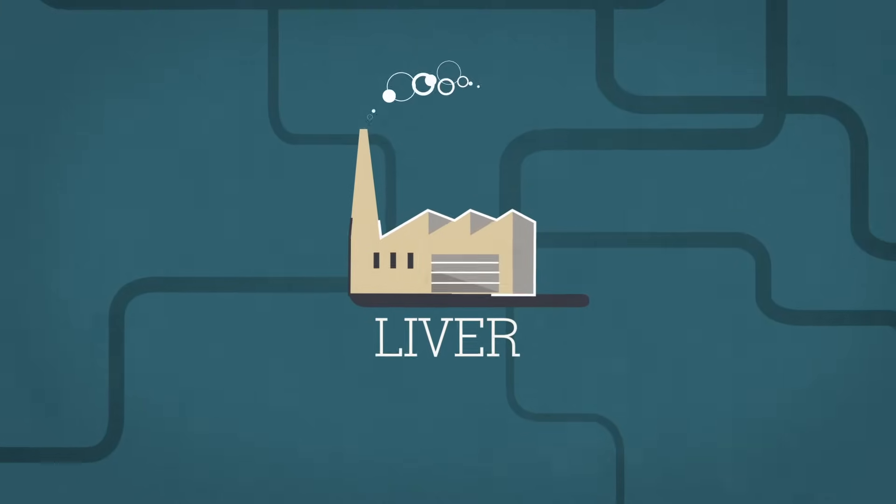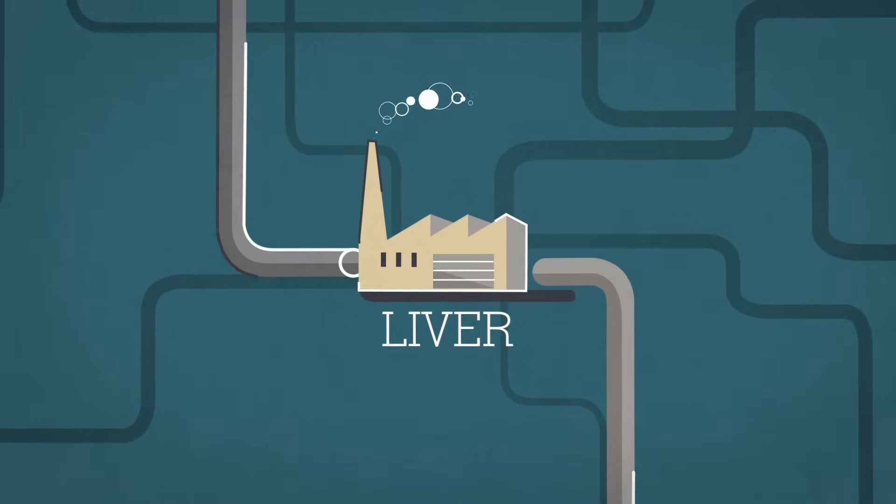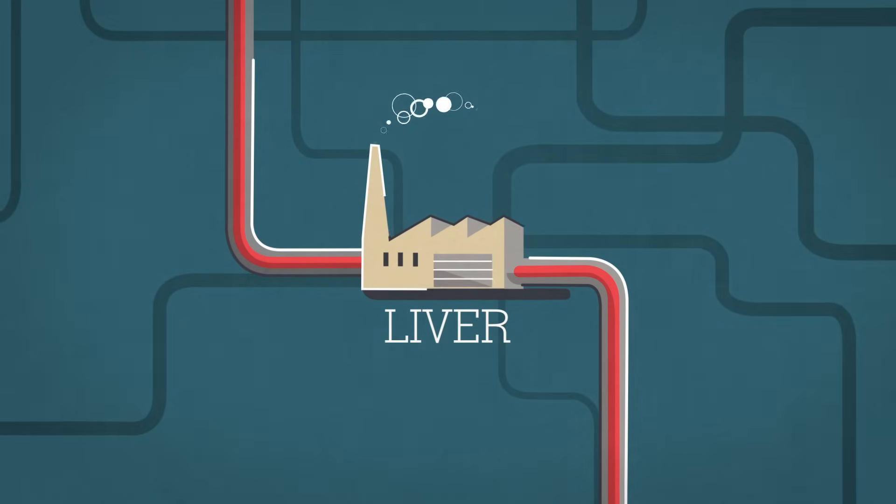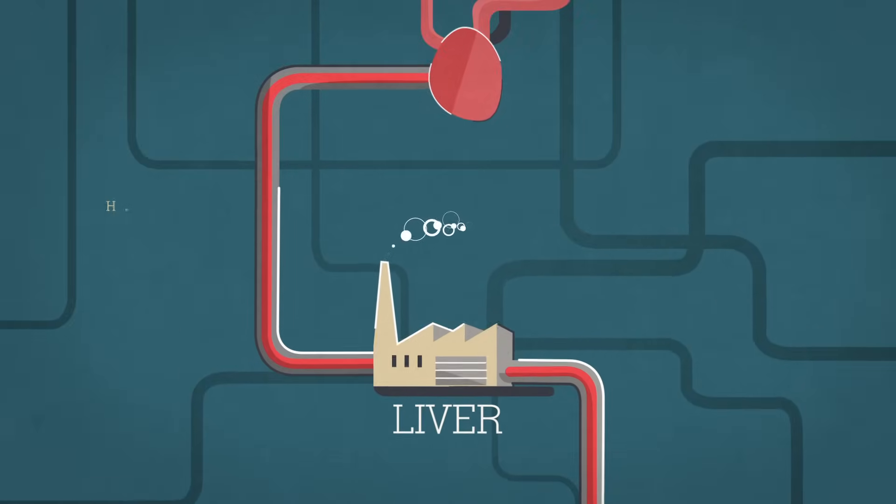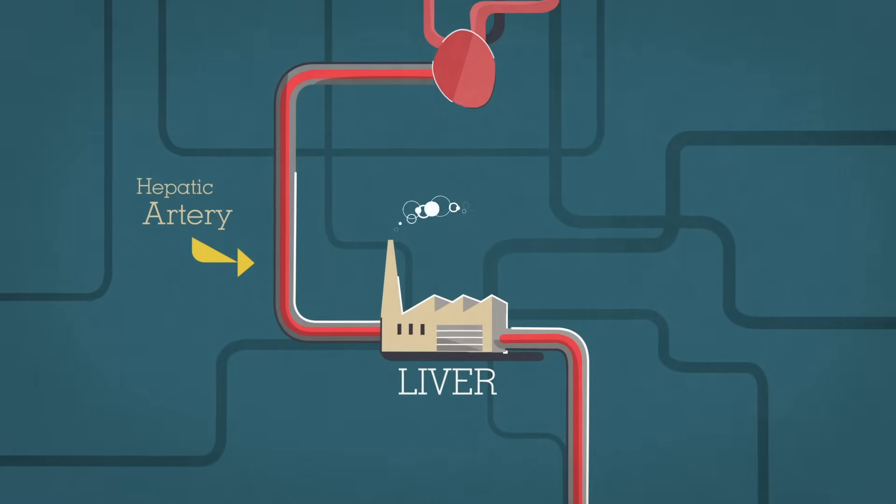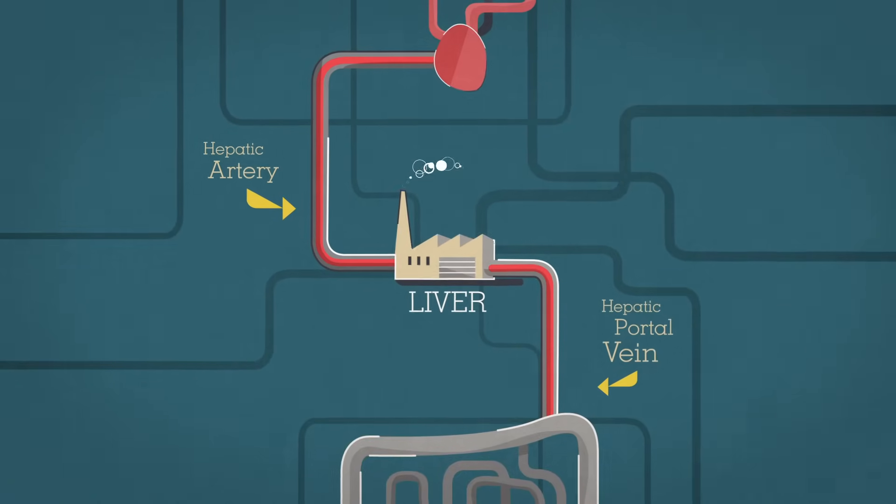One of the liver's main functions is to filter the body's blood, which it receives in regular shipments from two sources. The hepatic artery delivers blood from the heart, while the hepatic portal vein brings it from the intestine.